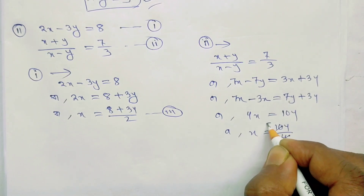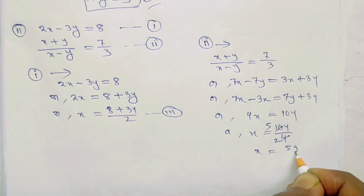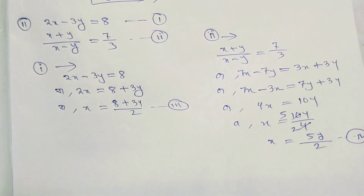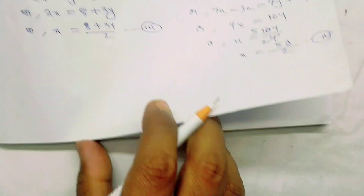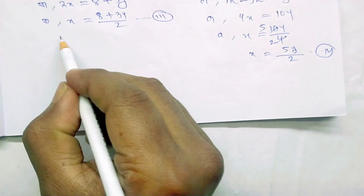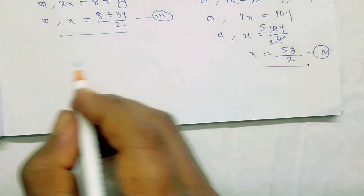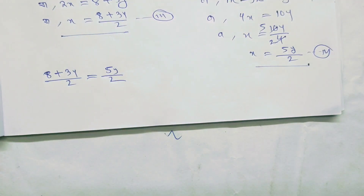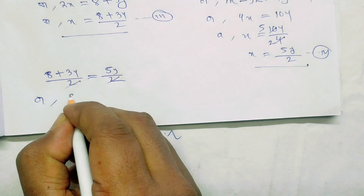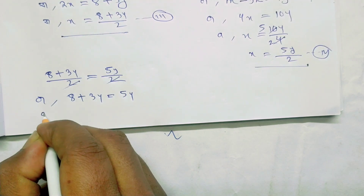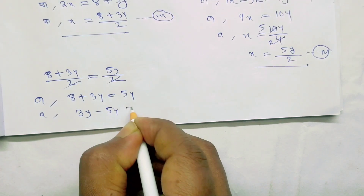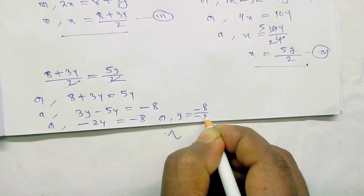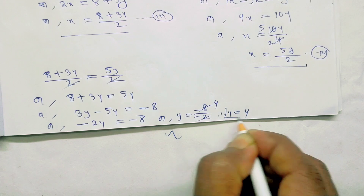Now, 4x equals 10y. So x plus 3y by 2 equals 5y by 2. So y equals 4.